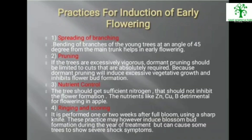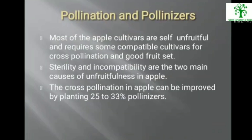Practices for induction of early flowering include: (1) Spreading of branches — bending branches at a 45-degree angle from the main trunk helps in early flowering. (2) Pruning — if trees are excessively vigorous, dormant pruning should be limited to essential cuts, as excessive dormant pruning induces vegetative growth and inhibits flower bud formation. (3) Nutrient control — sufficient nitrogen should not inhibit flower formation; zinc, copper, and boron are beneficial for flowering. (4) Ringing and scoring — performed 1–2 weeks after full bloom using a sharp knife. Most apple cultivars are self-unfruitful and require a compatible cultivar for cross-pollination. Planting 25–33% pollinizers can improve cross-pollination.